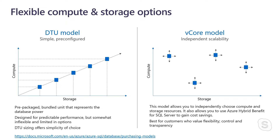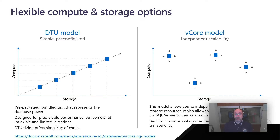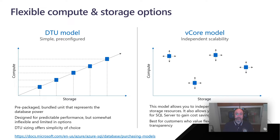The DTU model in this particular scenario is probably the most effective one for customers, because it lets them start thinking in terms of a linear bundle of resources like compute and storage that can progressively scale up or down depending on their needs. DTU effectively provides this simplified approach to the capacity planning process itself, where the vCore model gives customers the ability to scale independently those resources and pick the closest option to what they already have in their existing systems.